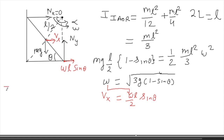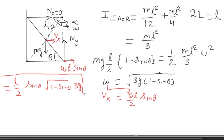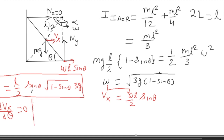Vx equals (l/2) × sinθ × √(3g(1 − sinθ)). This is the velocity along the x direction at any moment. You are looking for the moment when the rod loses contact for the first time, when Vx is maximum. So differentiate dVx/dθ and equate to zero. After differentiating this function you will get sinθ = 2/3.